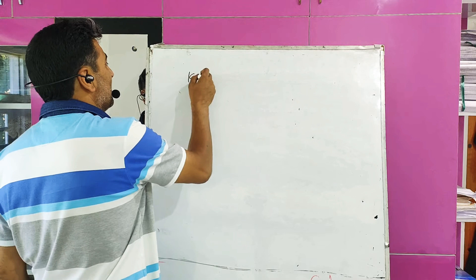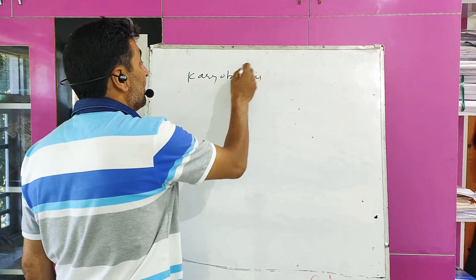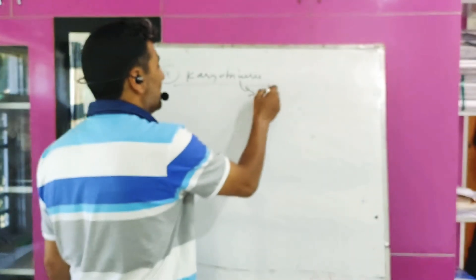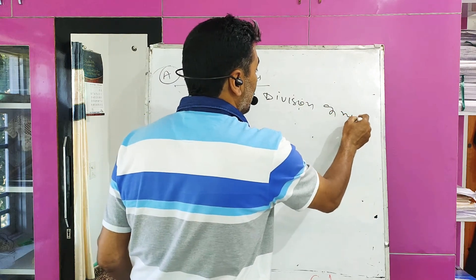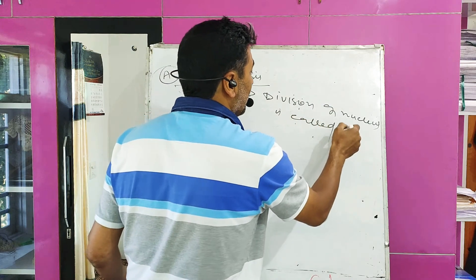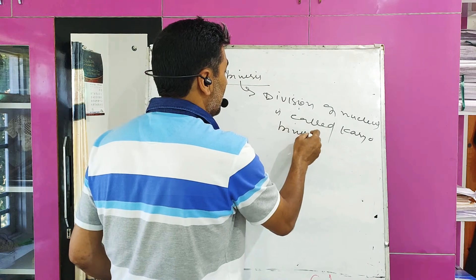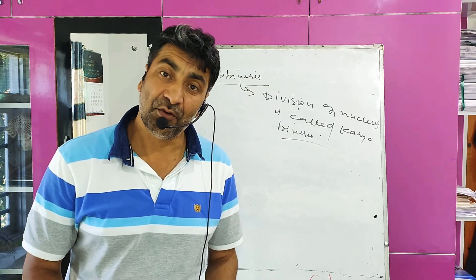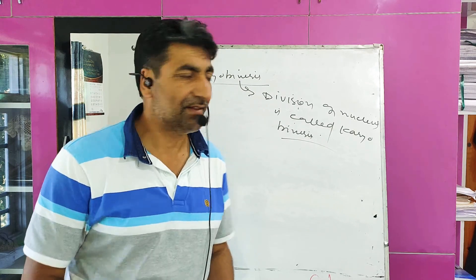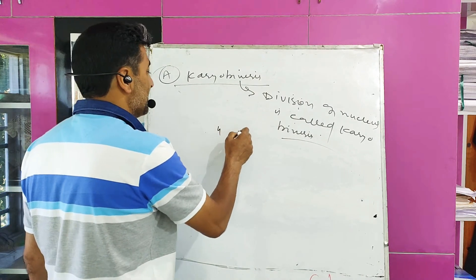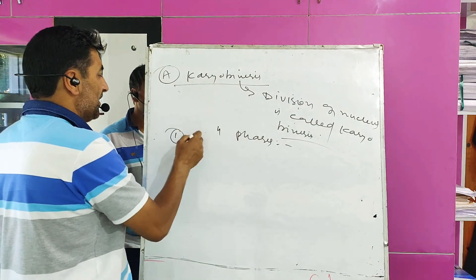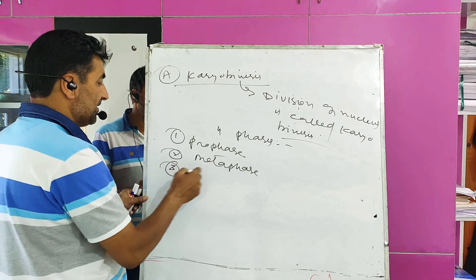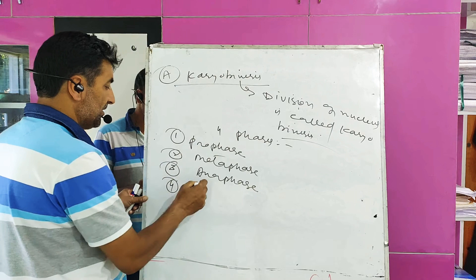Now, what is karyokinesis? Karyokinesis, as the name indicates. Karyokinesis is completed in four main phases: number first, prophase; number second, metaphase; number third, anaphase; and number four, telophase.